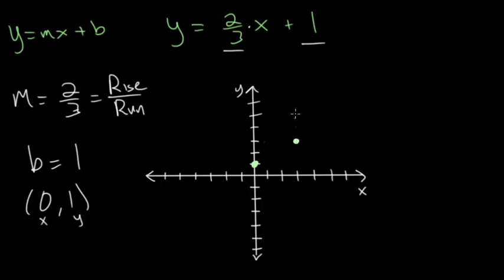So right there, we can do it again, one, two, up, and one, two, three, over. And you can see those line up nicely for us. And now just connecting them all with a straight line. And so this green line is the geometric representation of the equation y is two thirds x plus one.